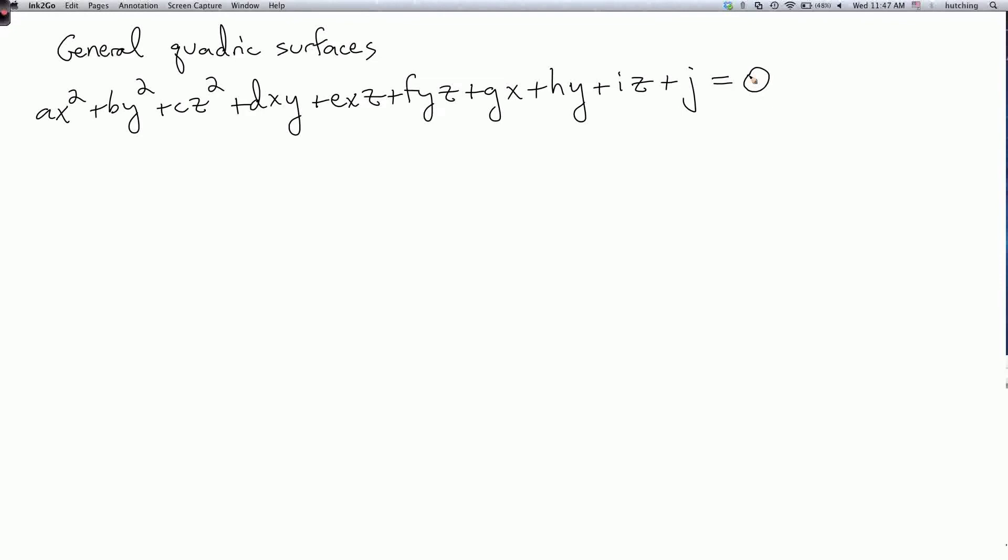So in general, you can get rid of these terms, or at least if you see one of these terms like a gx and if you also have an ax squared, then you can get rid of that term by completing the square.